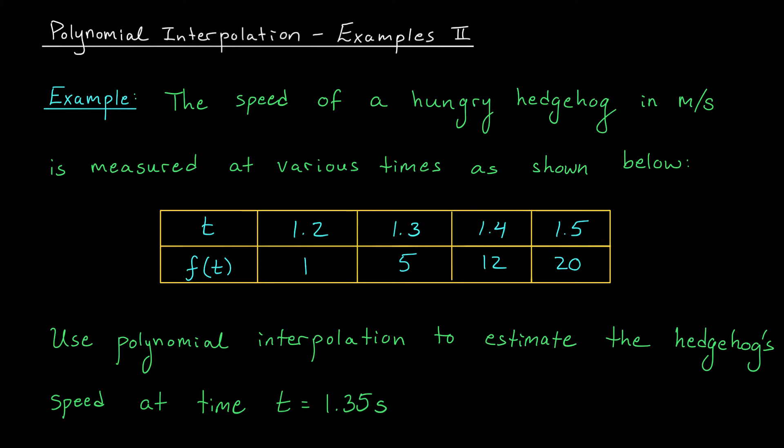The hedgehog's speed in meters per second is known at a few different times t: t equals 1.2 seconds, 1.3, 1.4, and 1.5. But we'd like to estimate the speed of the hedgehog at t equals 1.35 seconds, partway between these two data points.